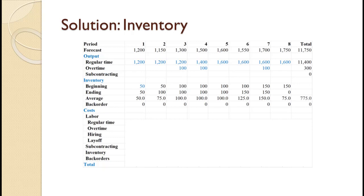The total of the average inventory values is 775. The total of the back orders is 0. If you missed any of the inventory values, that mistake will affect your cost calculations. Let me suggest that you pause the video and try to rework the inventory calculations on your own. Once you're done, you can use the video to check your work and spot any mistakes you might have made.